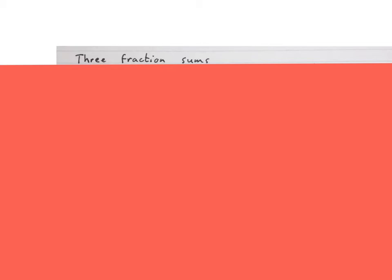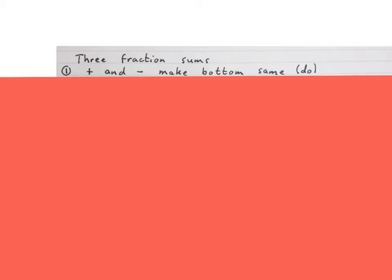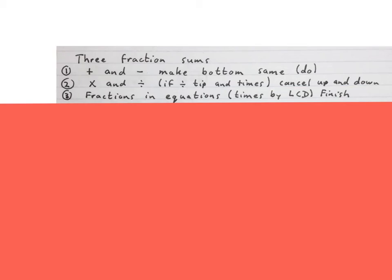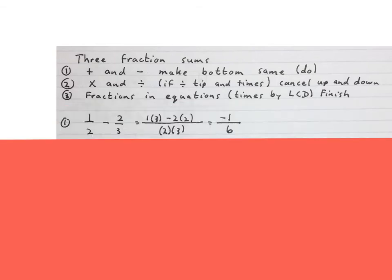In grade 7 you were taught that there are 3 basic common fraction sum types in the world. Firstly there were plus and minus sums — you make the bottoms the same and then do the sum, which is what we do in this video. For example, a half plus two thirds: you find the LCD, keep the LCD, work out the top and simplify the answer.